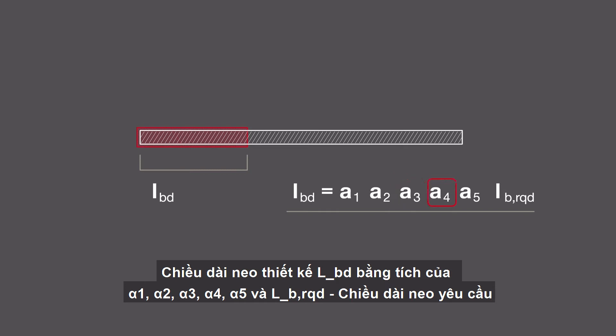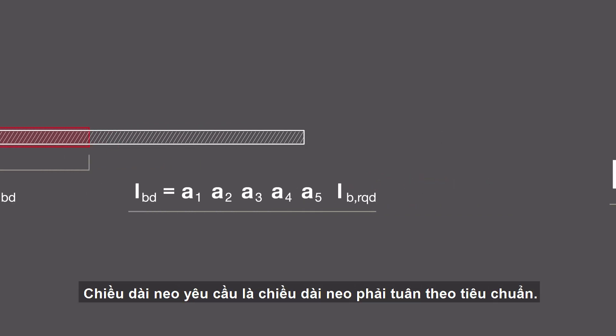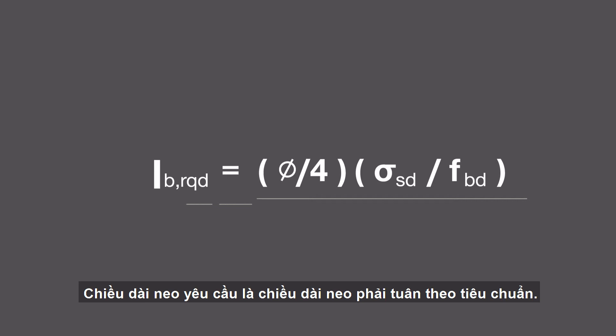lb required is the standard anchorage length. φ is the rebar diameter, σ_sd is the stress acting on the bar, and f_bd is the bond strength coming from the rebar.